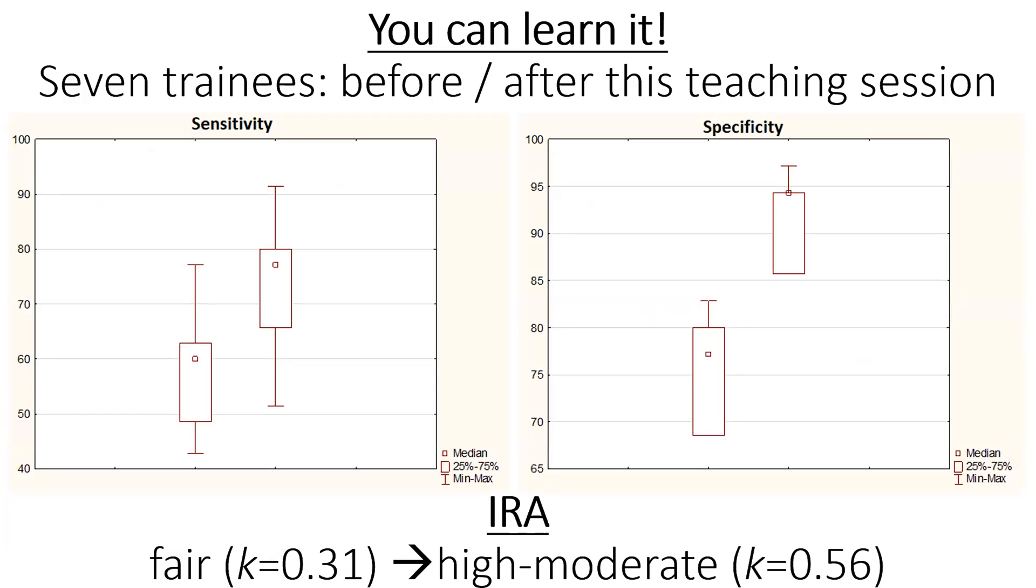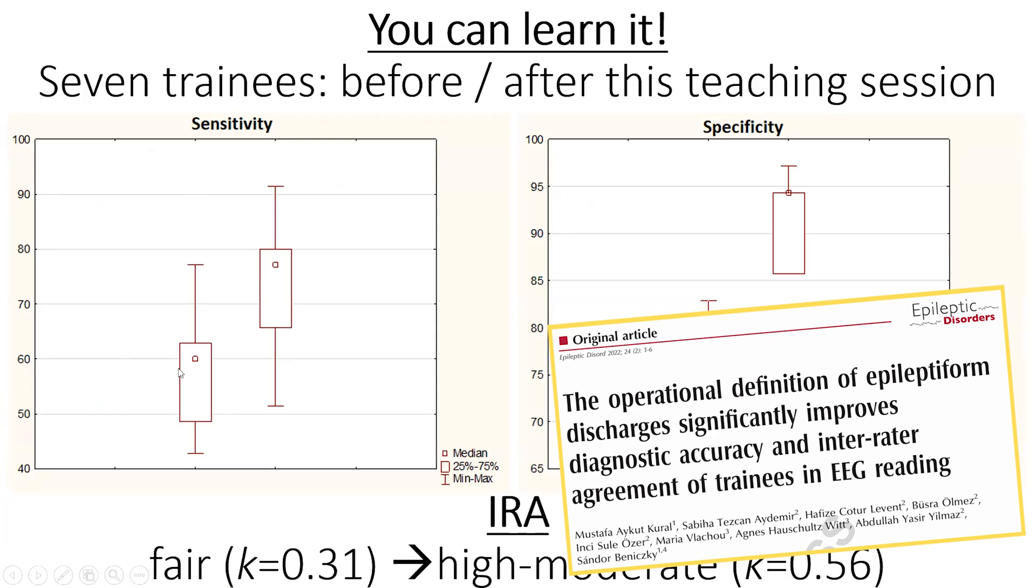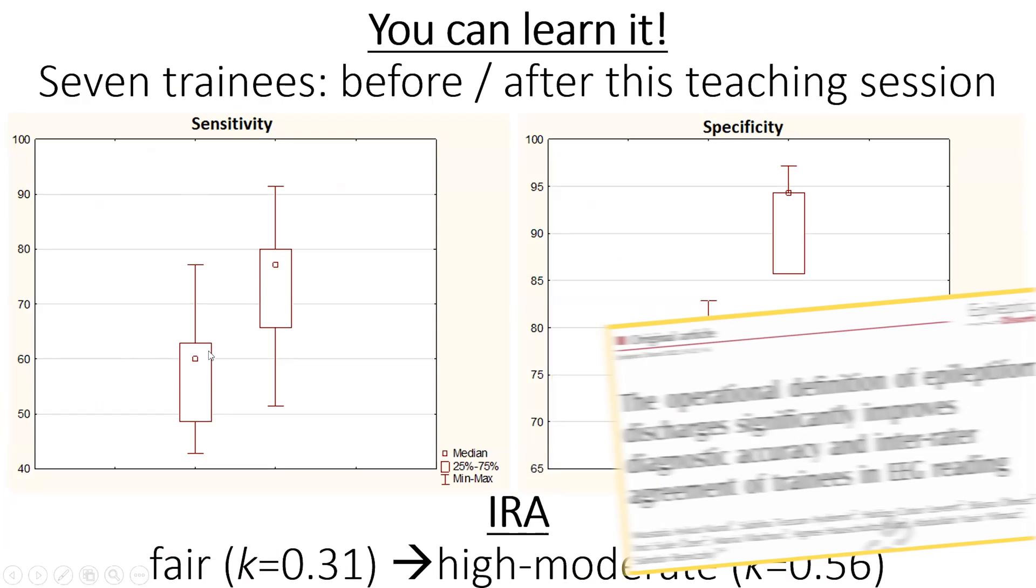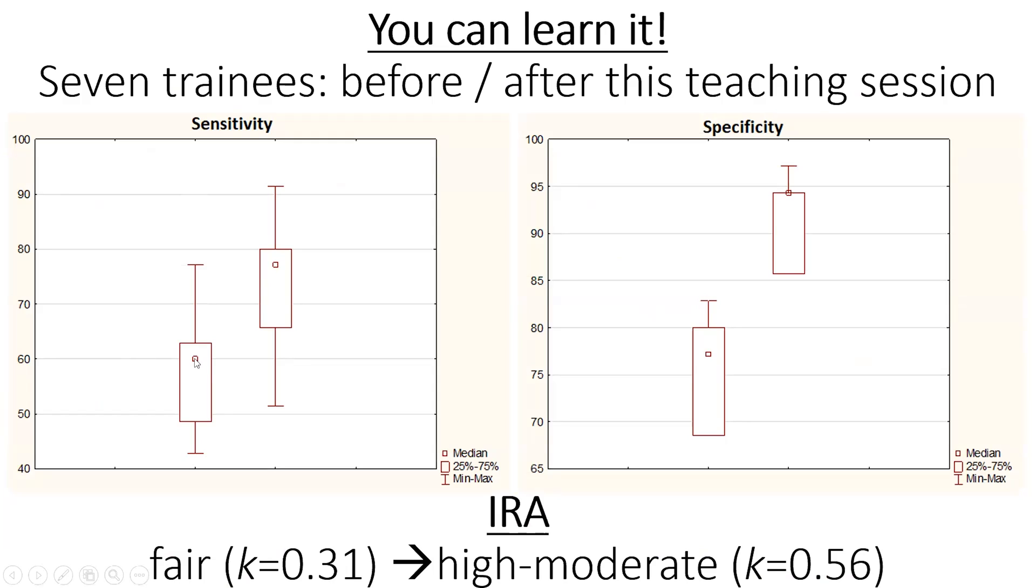So we looked at this in a systematic way with seven young trainees, and you can see that before they got the training in the IFCN criteria, their sensitivity was just 60 percent, and then it significantly increased close to 80 percent. And more importantly, their specificity was really low, so 77, and then it approached 95 percent, our goal, after the training. But this is compared to the gold standard. Now what is independent from the gold standard is their inter-rater agreement. And you see how much they disagreed before. So their inter-rater agreement was only 0.3, only fair, and then it significantly increased to a high moderate, to 0.56, after they got the training.